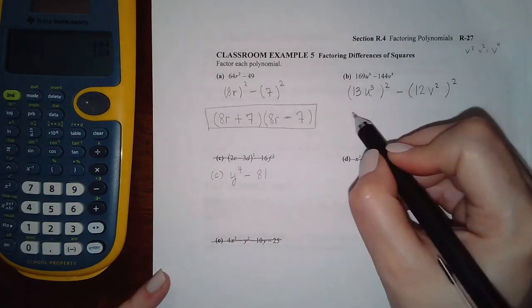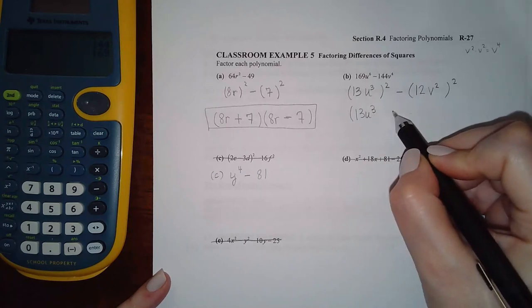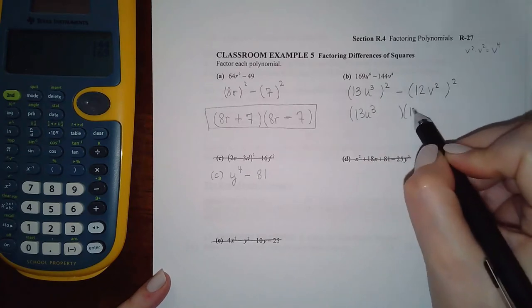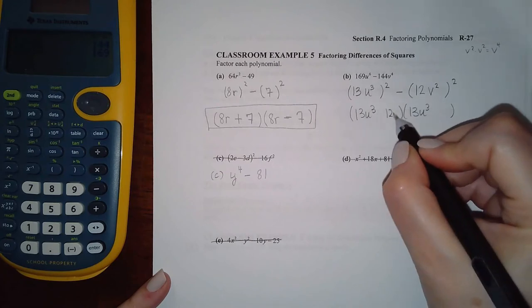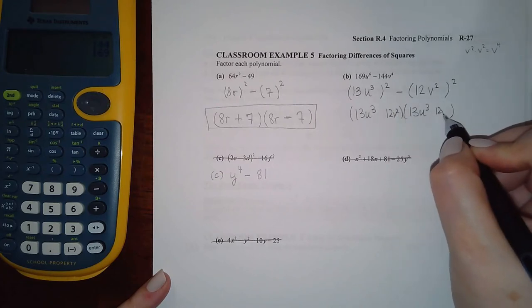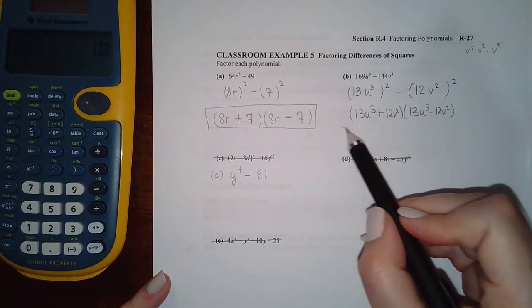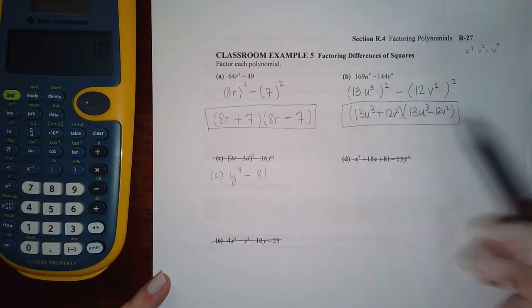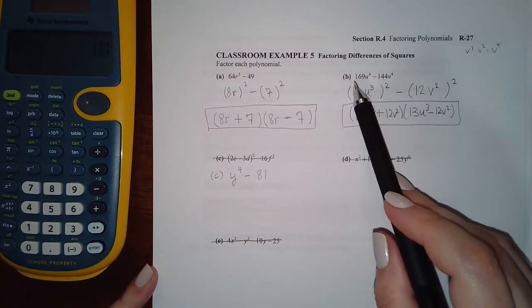And then 12v squared goes in the back. One of these should have a plus, the other should have a minus. And this is the factorization. You can multiply it out, combine your like terms, and you should get the original.